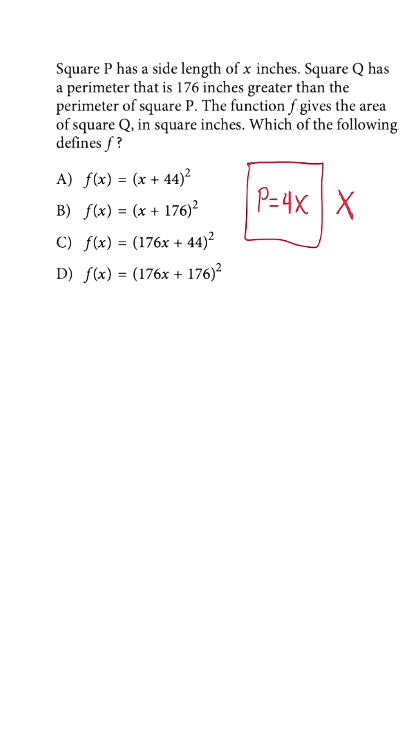When we read more into the problem, it says that square Q, which is what we're really focusing on, has a perimeter that is 176 inches greater than the perimeter for the first square.